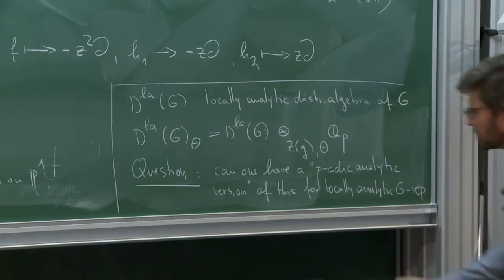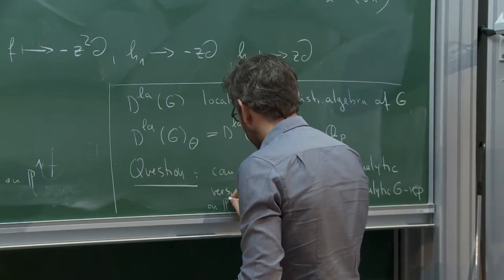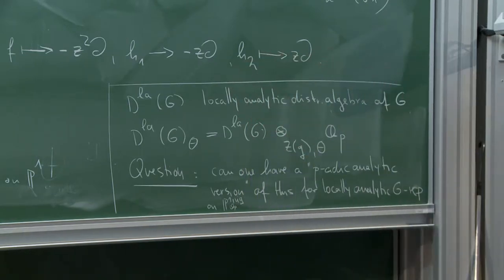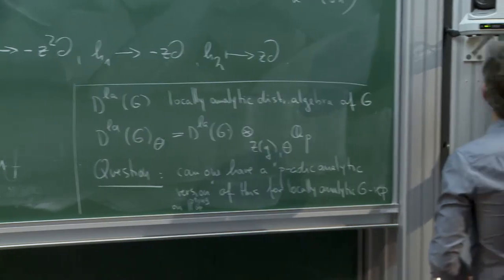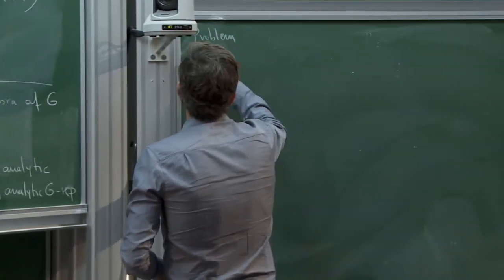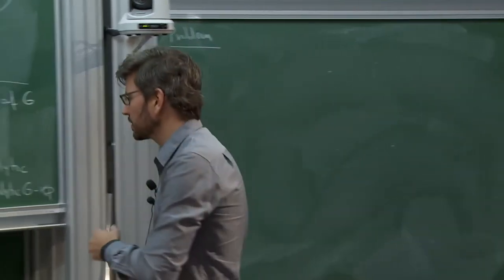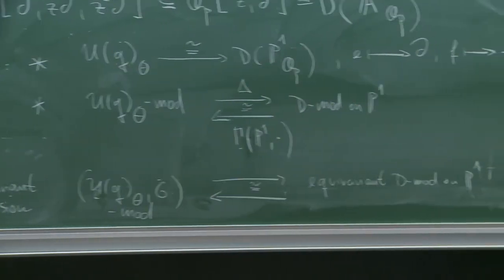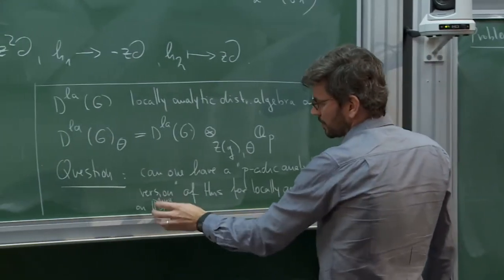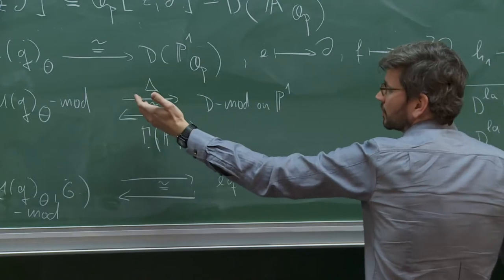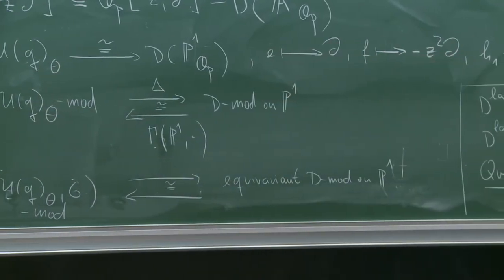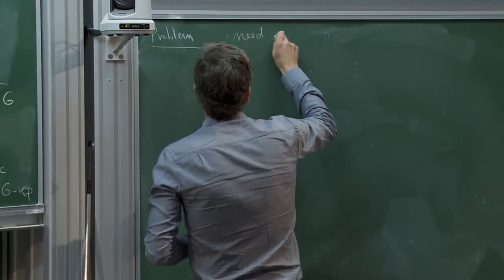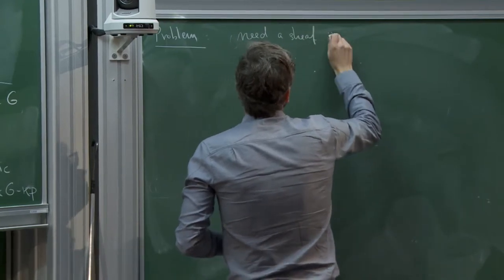By p-adic analytic version I mean, for example, on the Bridgeland analytic projective line. But one soon runs into the following problem. In the locally analytic representation theory of G, there occur some power series envelopes of the universal enveloping algebra. If one just takes the rigid analytic P1 with the naive differential operators, one will always end up with polynomial expressions in the Lie algebra and will never get these power series envelopes. So one needs a sheaf of completed differential operators.